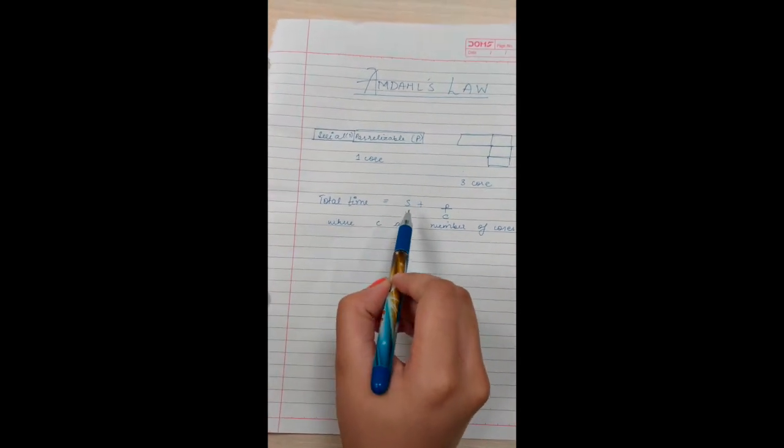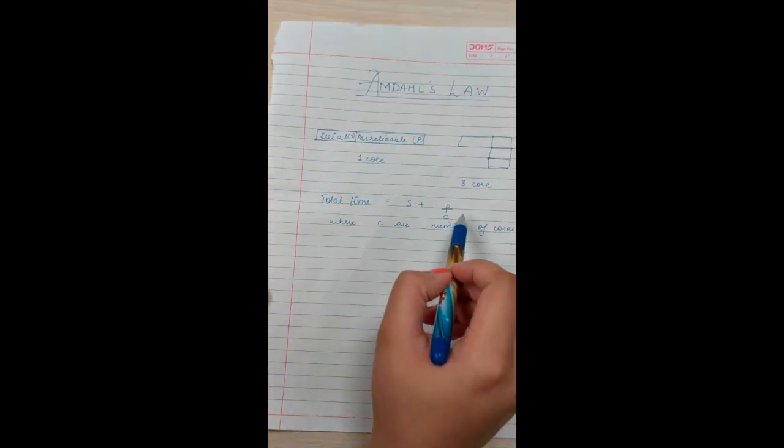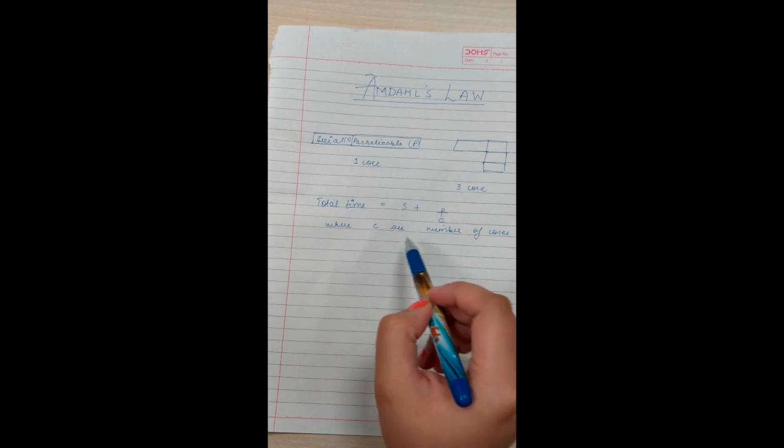Here we see that the total time is S (serial) plus P (parallel) divided by C, which is the number of cores.